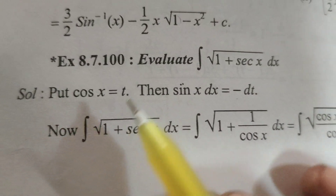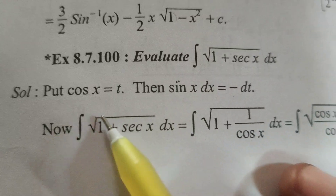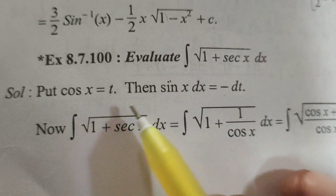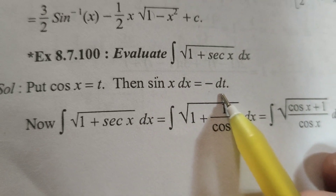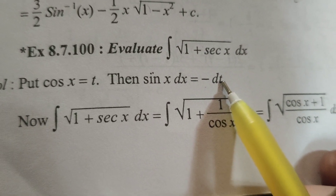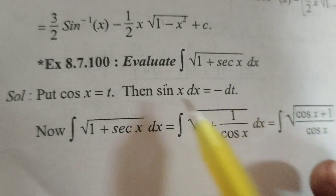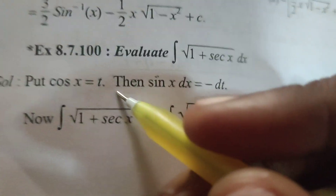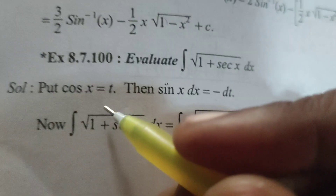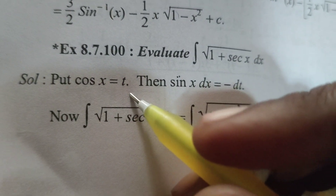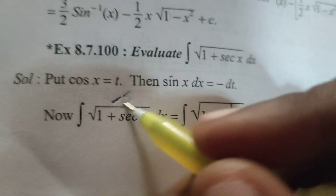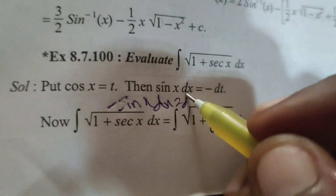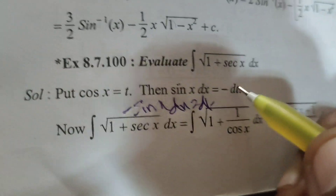To solve this, put cos x equals to t, then differentiate: sin x dx equals to minus dt. Because the differentiation of cos x is minus sin x, so minus sin x dx equals to dt, therefore sin x dx equals to minus dt.